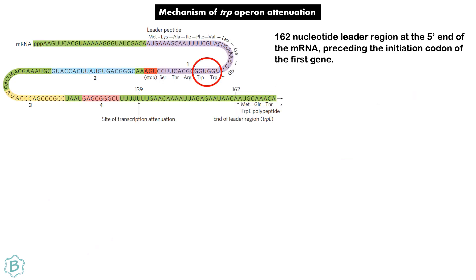Coming to the mechanism of the tryptophan operon: the signal of attenuation is encoded in four regions in the mRNA. There is a 162-nucleotide leader region at the 5' end of the mRNA preceding the initiation codon of the first gene. Note that there are two tryptophan codons in this leader peptide region, and there are regions labeled 1, 2, 3, and 4.